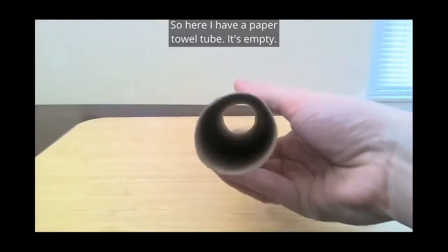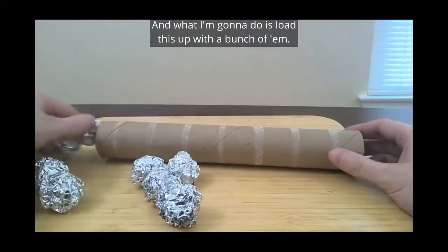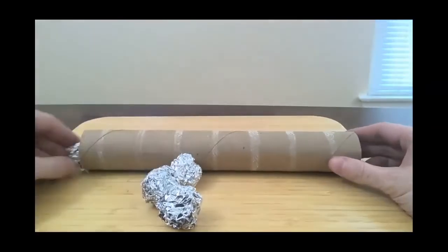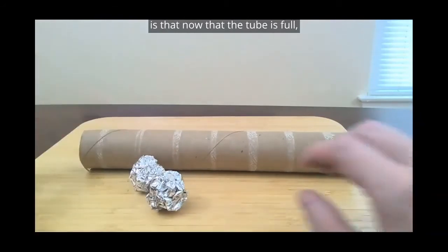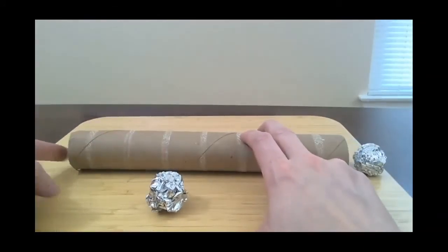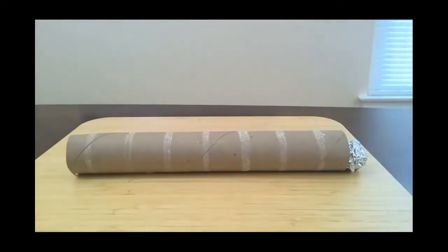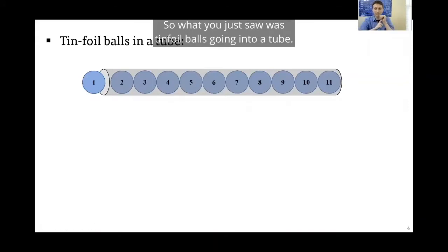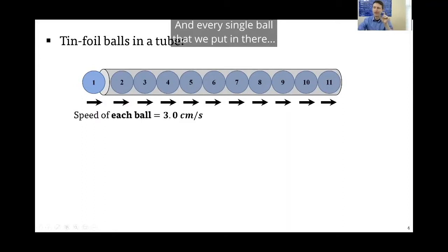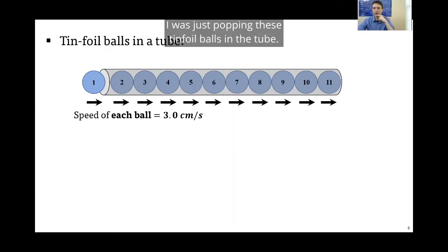Here I have a paper towel tube. It's empty. What I have is a bunch of ions that I've made out of tin foil. I'm going to load this up with a bunch of them. What you can see happen is that now that the tube is full, whenever I add an ion, one pops out the other side. And when I add one more ion, another one pops out the other side. So what you just saw was tin foil balls going into a tube. Every single ball that we put in there was about 3 centimeters. So as I pushed one in, it pushed its neighbor, and it pushed its neighbor, and it pushed its neighbor. The speed of each ball was about 3 centimeters per second. One 1,000, two 1,000. I was just popping these tin foil balls in the tube.